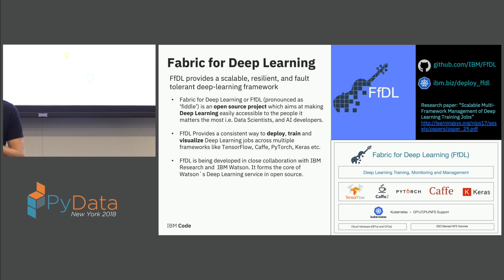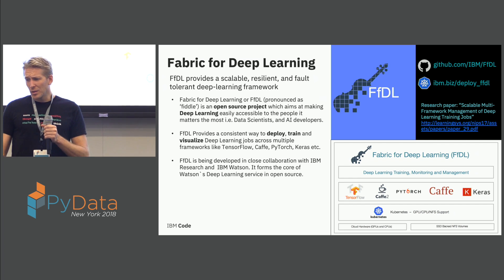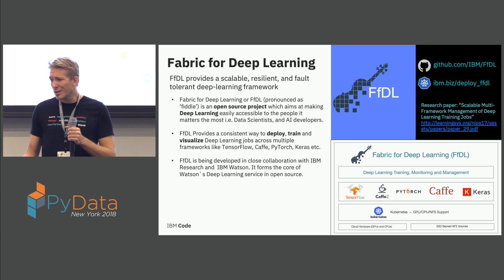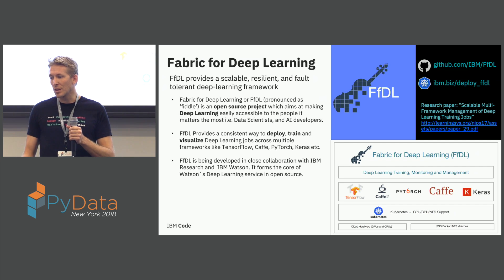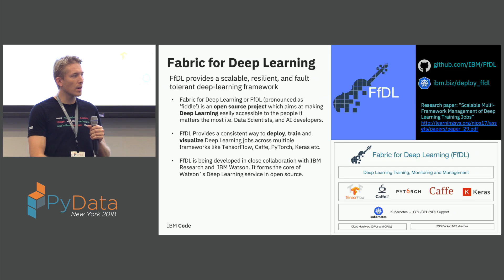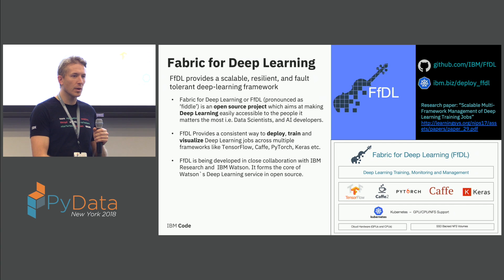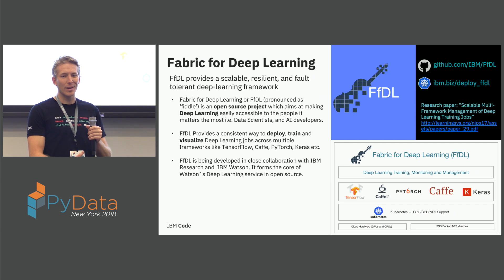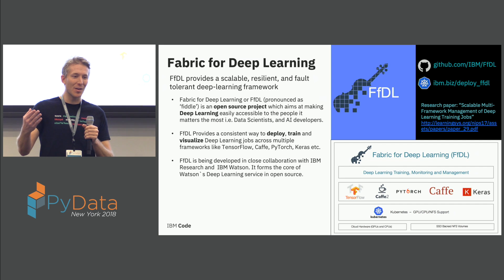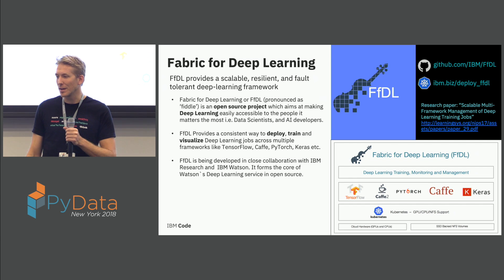FIDDLE includes tools for monitoring your jobs and also visualizing them. How do I visualize if the models I've trained are getting more accurate? Is the validation accuracy going up or going down?